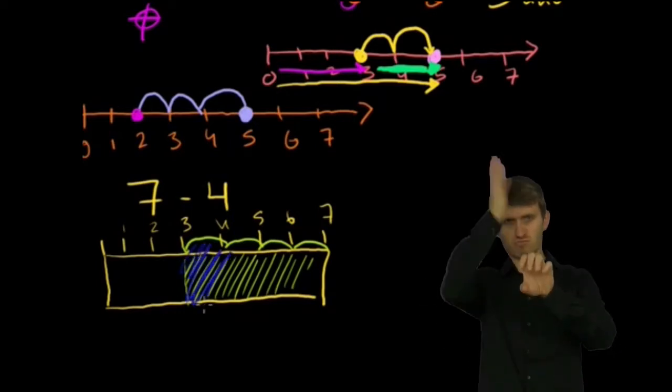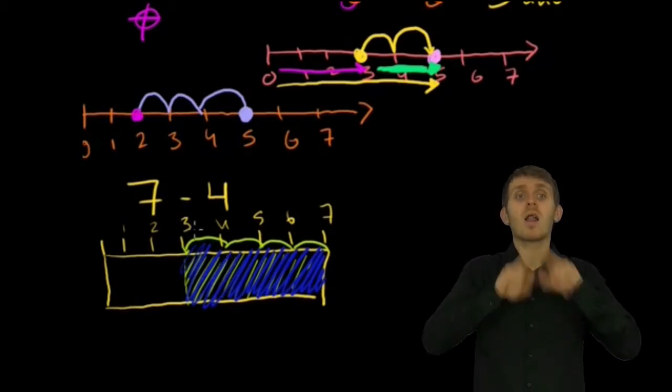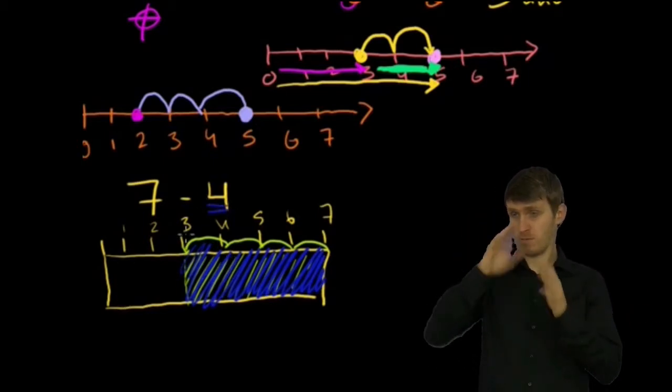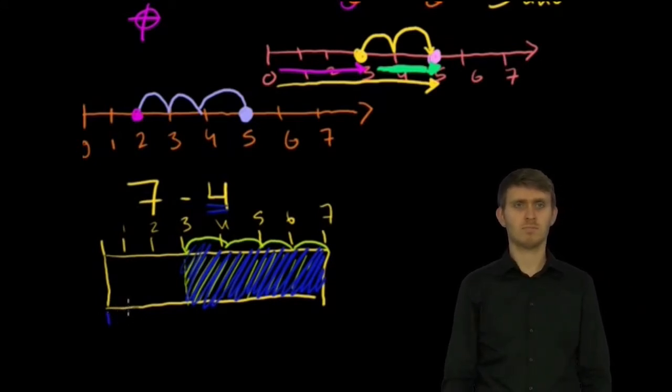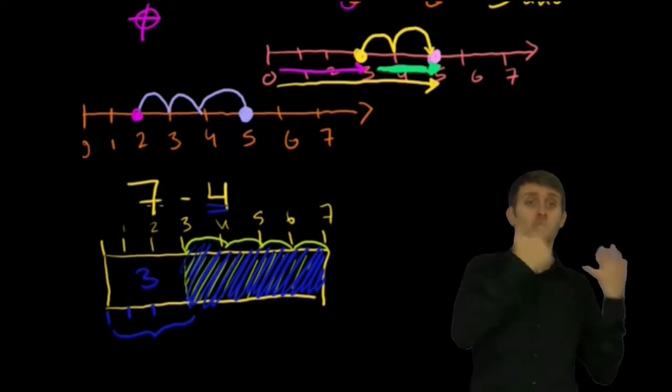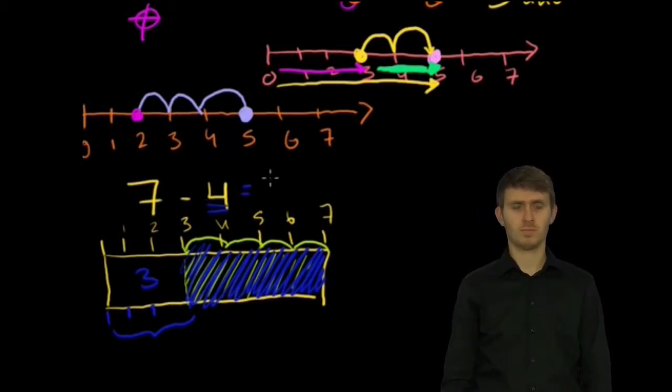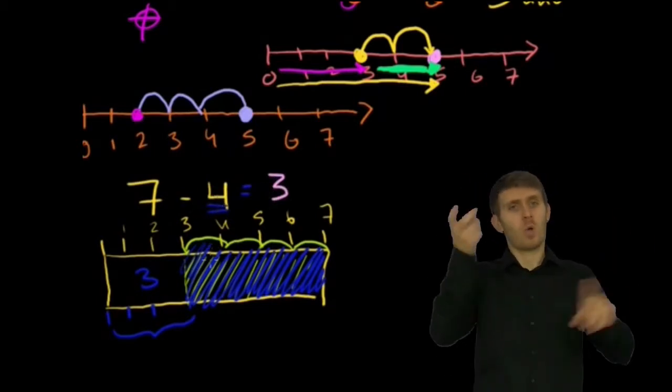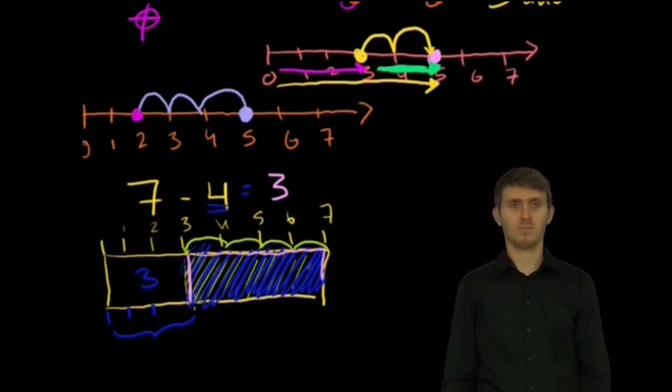How much wood do I have left? So all of this stuff right here, I'm eliminating. I'm sawing it off. I'm sawing it off of the wood. So all of this stuff is going to disappear. I'm grinding it away. I'm sawing that off. So I'm just left with, after I saw off the 4 feet of the wood, I'm left with 1, 2, 3 inches of wood. So this is 3. So 7 minus 4 is equal to 3.